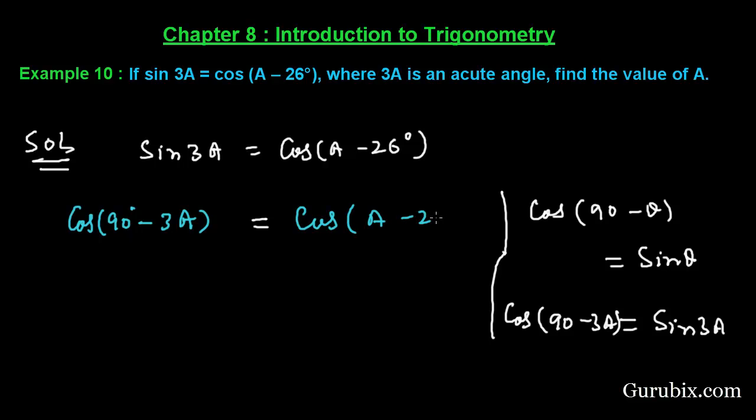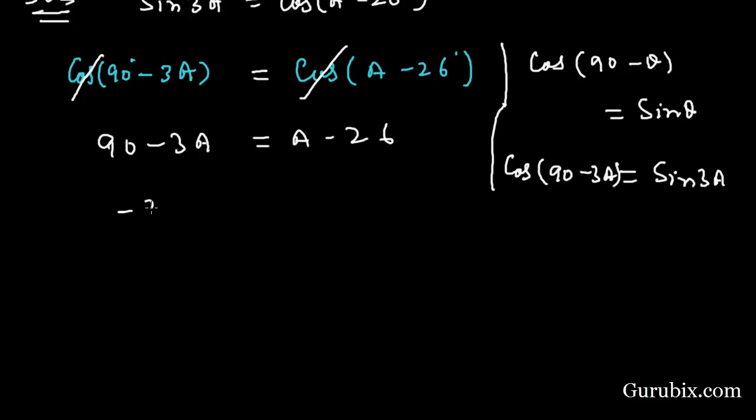Now we can cancel out cos with cos. Then we have 90 - 3A equals A - 26. This means -3A - A equals -26 - 90, which equals -116.